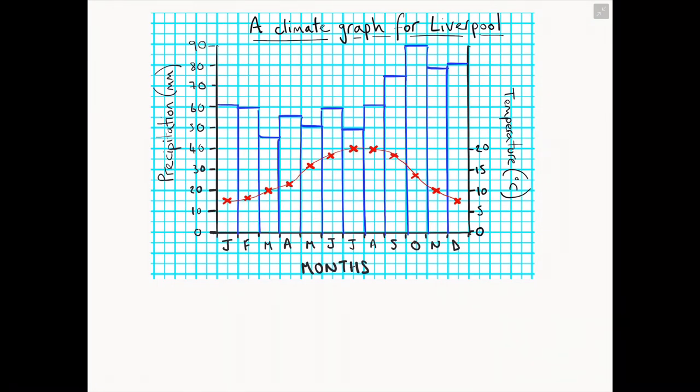Now we have a completed climate graph, we can start to analyze our climate graph and practice some mathematical skills. One common GCSE question is when examiners ask us to state the maximum or minimum precipitation or temperature using a climate graph provided. In this example, if we can look at the left-hand side of our axis for precipitation, we can search for the tallest bar and refer to our left-hand axis. In this case then, the maximum precipitation for Liverpool is 90 millimeters.